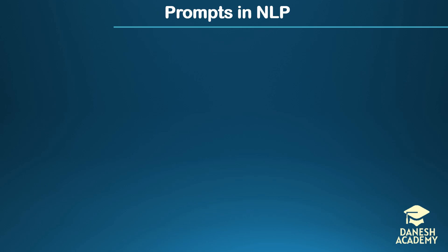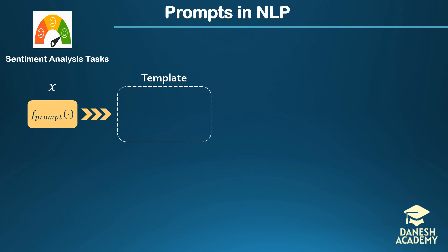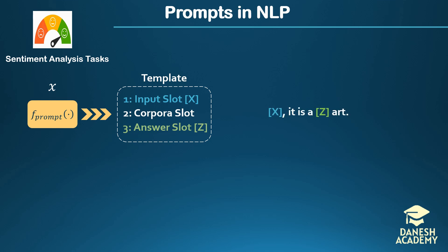Now let's delve into the details of prompting in natural language processing. Consider a sentiment analysis task where we employ foundation models to predict the sentiment of user comments on a specific topic — art in this case. We start with an input sentence, denoted as X, which is passed to the foundation model. To prompt the foundation model and obtain a label, we incorporate the sentence within a prompt template defined by a template function. Each prompt template function consists of three slots: the input slot X, a context slot, and the foundation model's response replaced by the answer slot Z. For a given task, the template might be 'the input is a [answer].' By replacing the input in the template, we design the proper prompt for the foundation model.